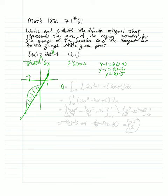So the area will equal the integral from negative 2 to 1 of 2x cubed minus 1 minus the quantity 6x minus 5 dx.